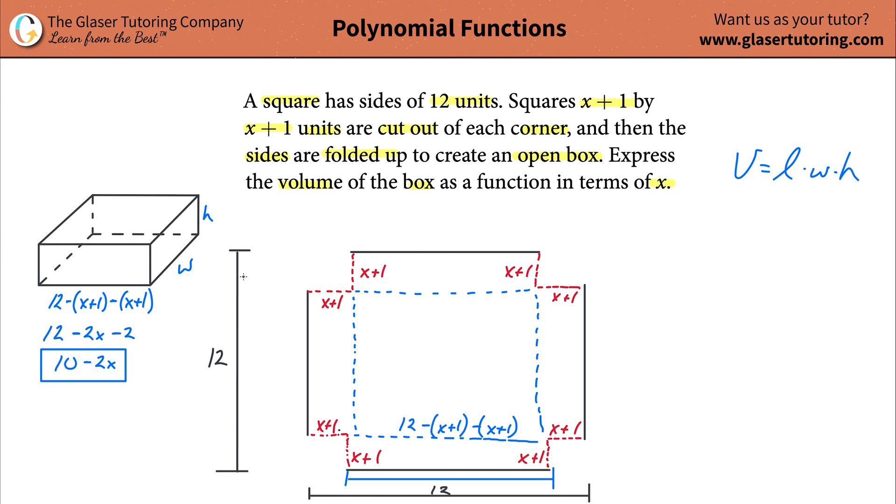You can start to simplify this. You can distribute the negative sign to each of the x's. So you'd have 12 minus two x minus two. And then you can combine some like terms. 12 minus two would be 10. So it's 10 minus 2x. That's the length of the box.